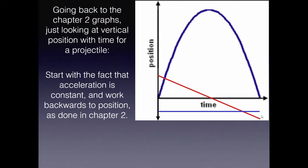If we graph the acceleration, it's a constant negative value, because the slope of velocity is constantly negative. We're going to start with acceleration being constant. At Earth's surface, that's g = −9.8 m/s². Whether g is positive or negative depends on your choice of positive direction, but the acceleration does not change in projectile motion.